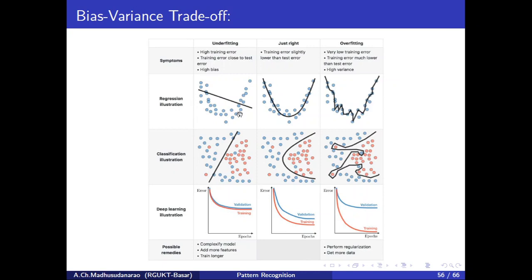If you look into this regression problem, this row corresponds to regression, and this is the training data we are having. The blue colored dots correspond to training data, and our model here is a linear model. The y-coordinate corresponds to y and x-coordinate corresponds to x, so our model is y equals to w1x plus w0. With the help of these training samples, we will try to learn those parameters w1 and w0.